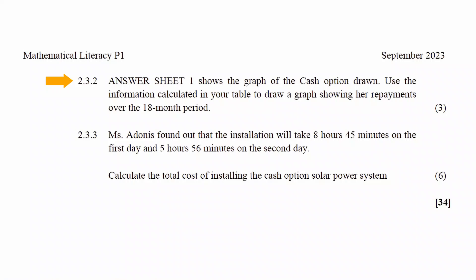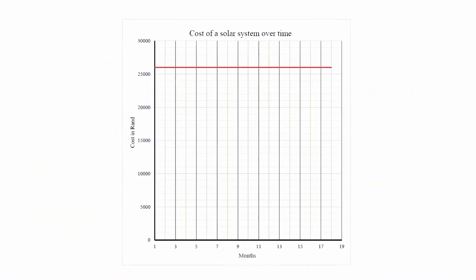Question 2.3.2 states that answer sheet 1 shows the graph of the cash option already drawn. You have to use the information calculated in your table to draw the graph showing repayments over the 18-month period. To draw the rent-to-own option you need to plot at least two points. The first must be the starting point, and the second can be any point from the table. You then join and extend these points in a straight line to form the graph.